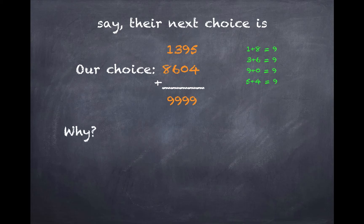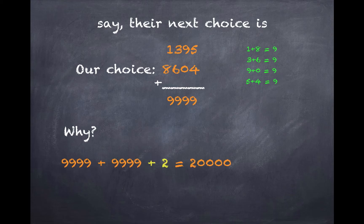So why do we want to do that? So till now, we have added 9999 twice. So we are two short of 20,000, which we compensated by adding to our first number.